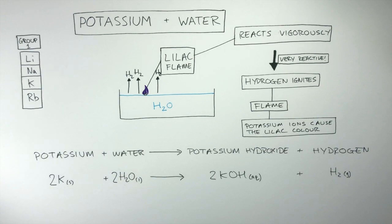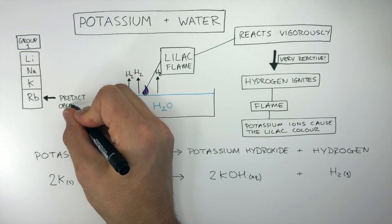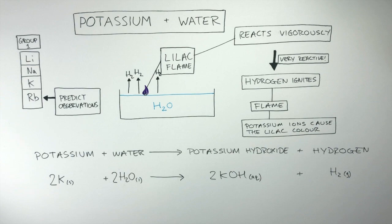Here are the first four elements in group one. In your exam, you may get a question where you have to predict the observations of rubidium reacting with water. This reaction is too dangerous to do in school, so it is not carried out.